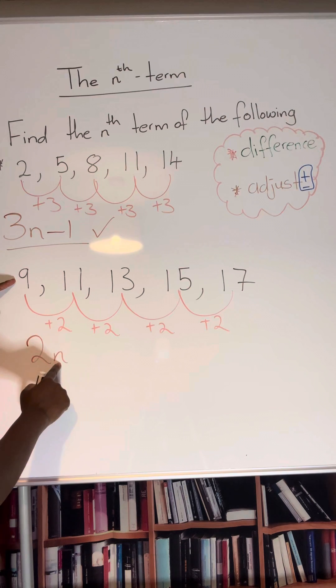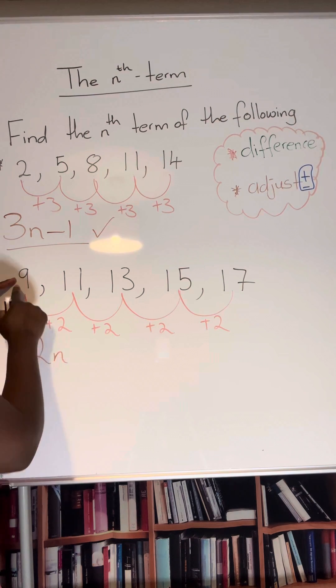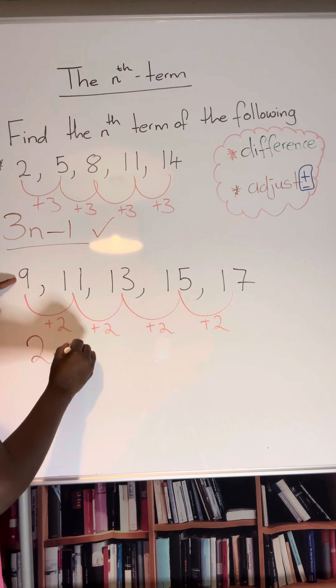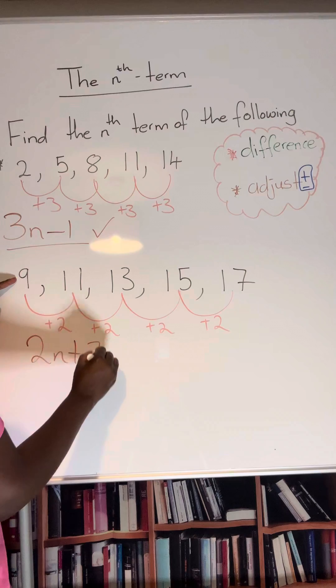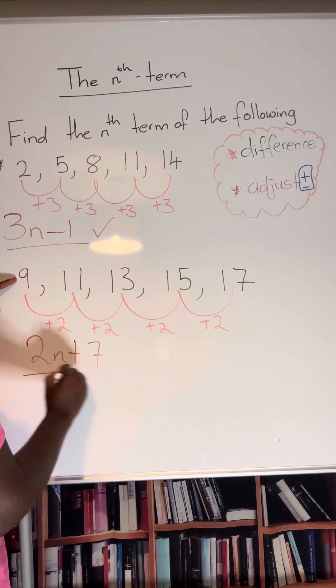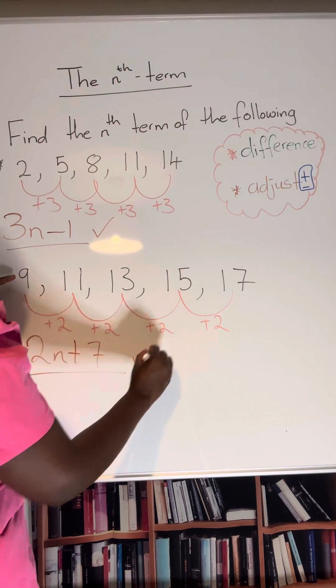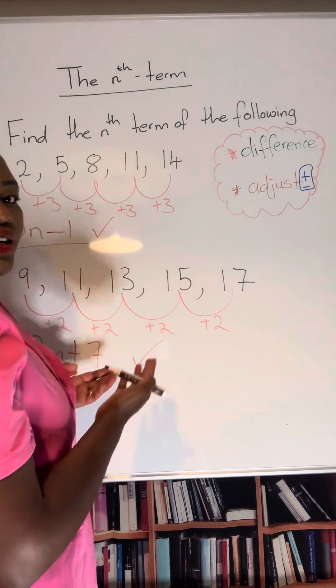So 2 times 1 is 2. To get to 9 you need to add 7. So therefore your nth term is 2n + 7.